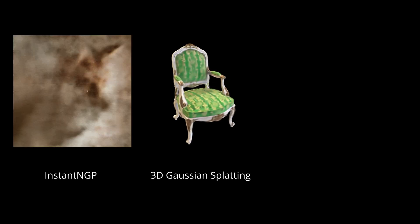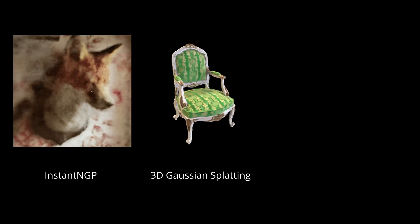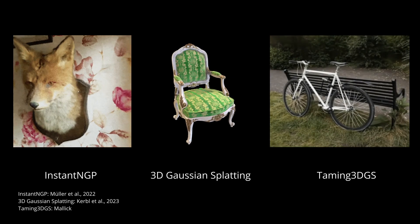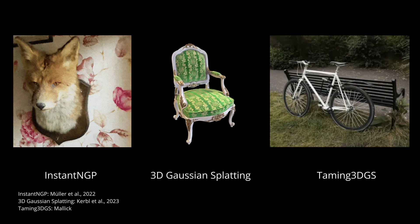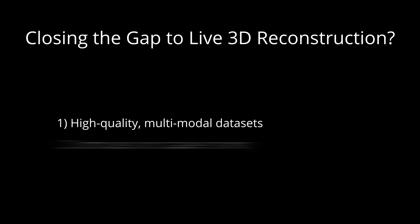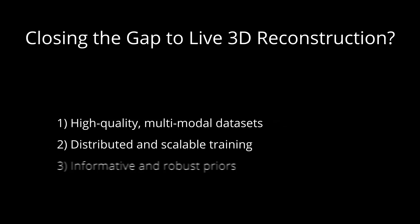Previously, the fastest methods are in the order of minutes. To support interactive exploration with six degrees of freedom of scenes in real-time, reconstruction must become over a thousand times faster. To make this a reality, we require realistic dynamic video sequences with multiple human actors and cameras, lightning-fast and scalable 3D scene reconstruction, and the right priors.